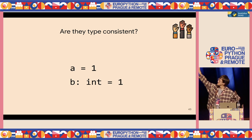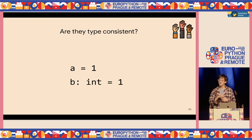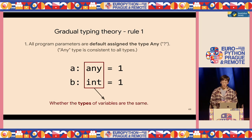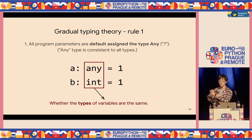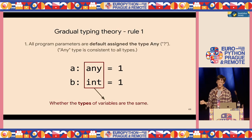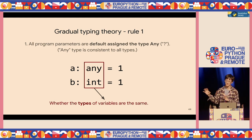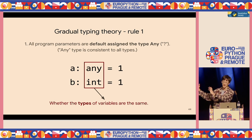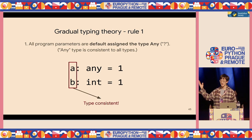Do you think these two things are type consistent? In gradual typing theory, rule number one: all unannotated program parameters default to any type, and any type is consistent with all types. So if we don't annotate a variable, it's assigned any type. Checking any type against integer type — yes, they are consistent. So A and B are type consistent.